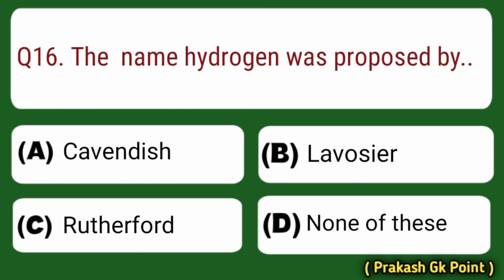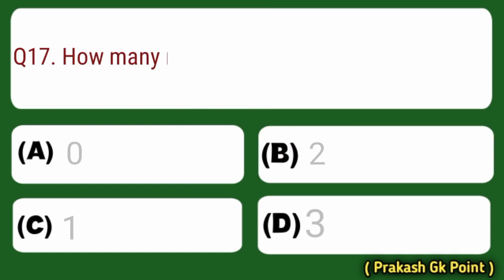Next question: the name hydrogen was proposed by? Answer: Option B — Lavoisier.